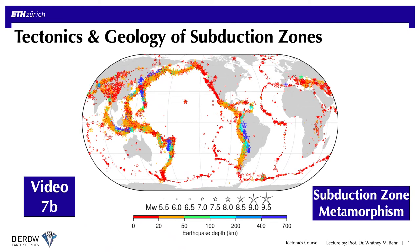Our last segment was on subduction zone thermal models and estimates of the thermal structure of different subduction zones as a function primarily of convergence rate and plate age, or the thermal parameter phi. This segment, we're going to return a bit to some of the geological aspects and focus on how those thermal structures translate into subduction zone metamorphism, and we'll also discuss a few of the implications of metamorphism on dehydration in subduction environments.